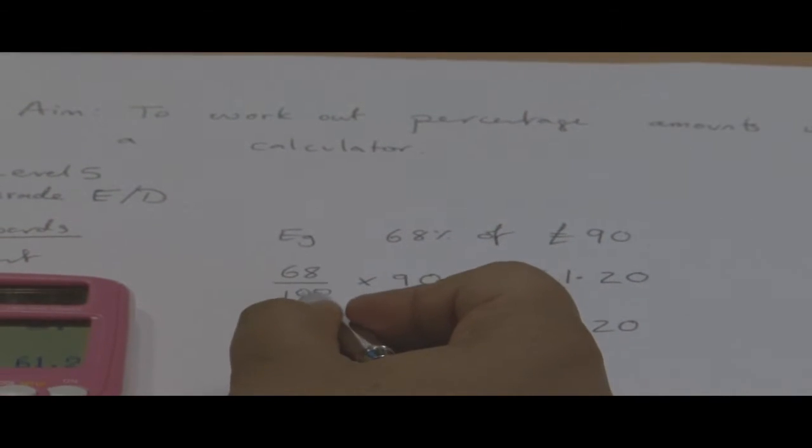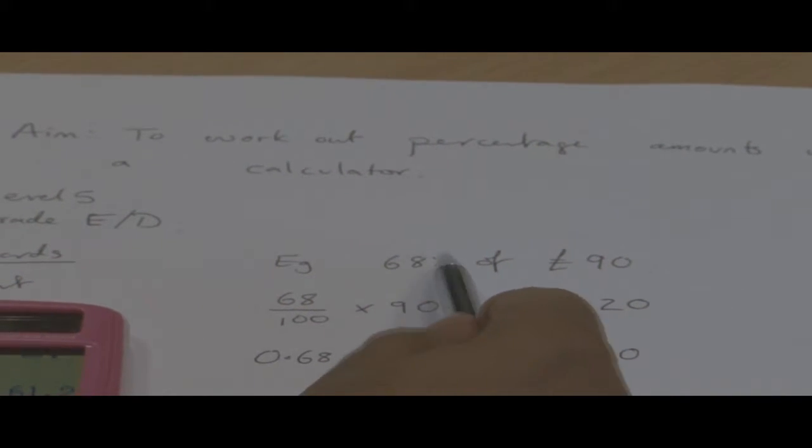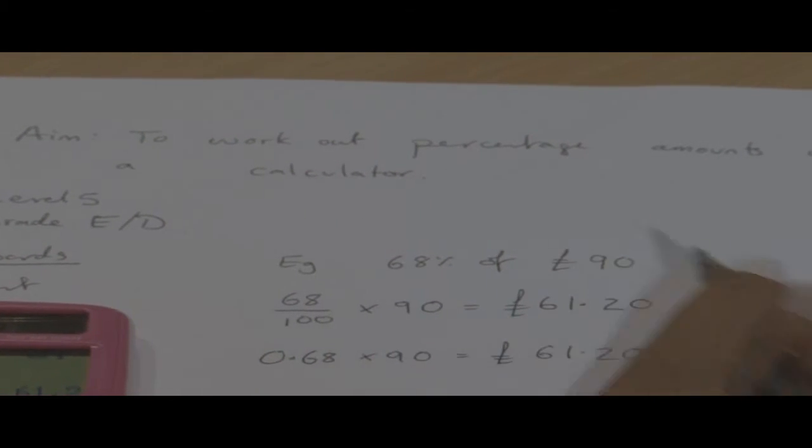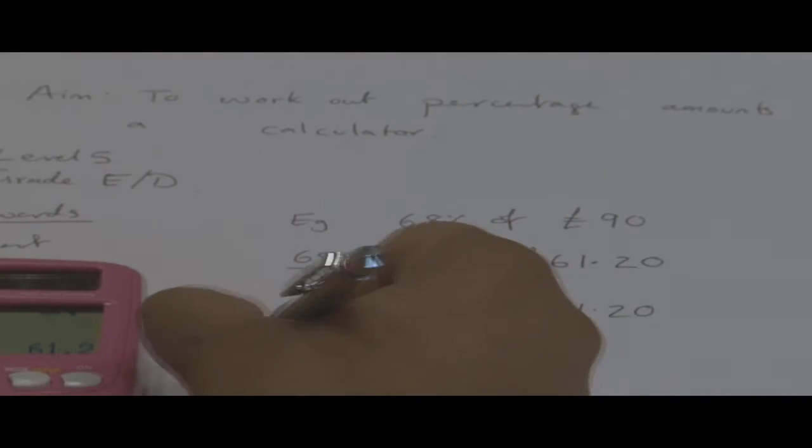So dividing by 100, it changes that percentage to a decimal. Let's do another example.